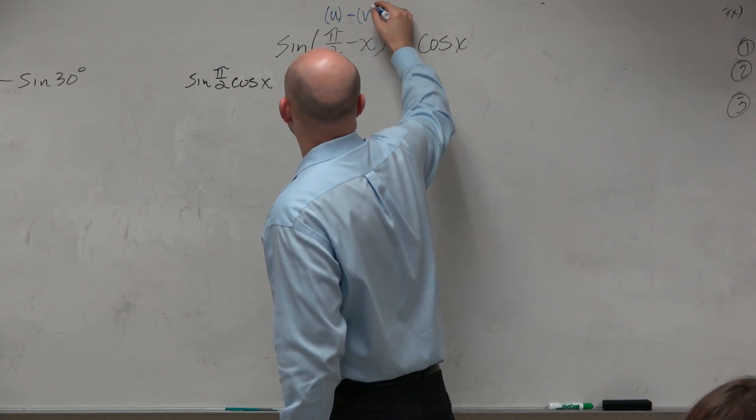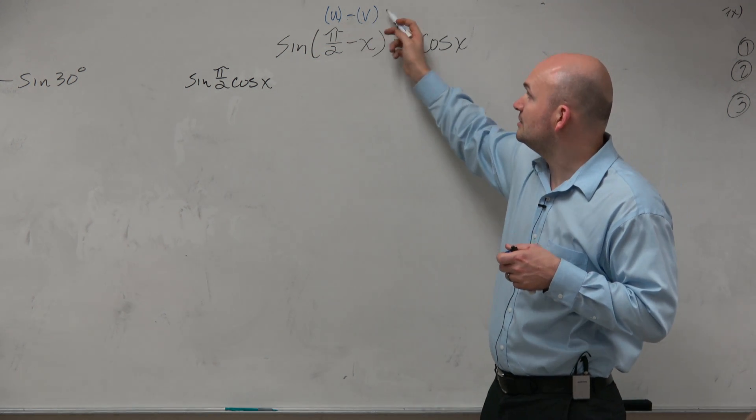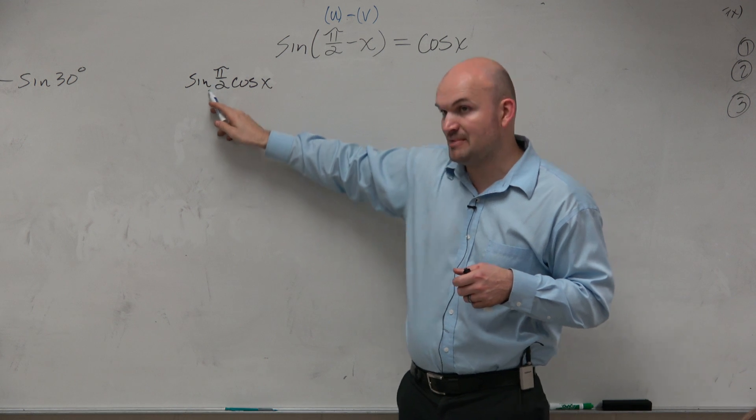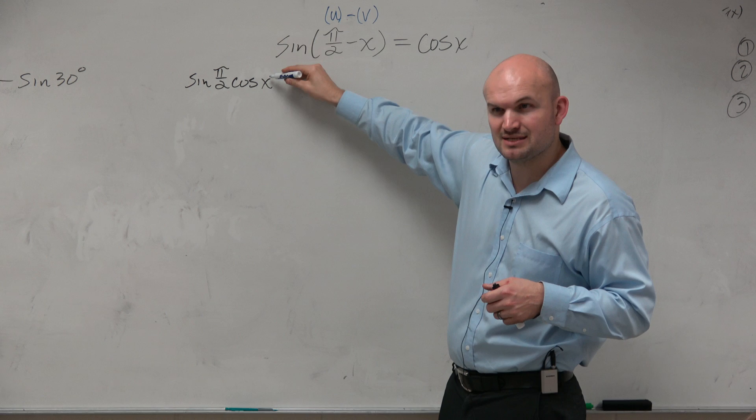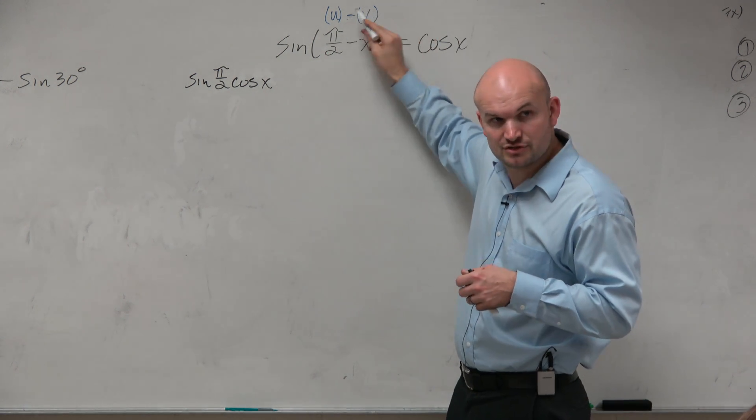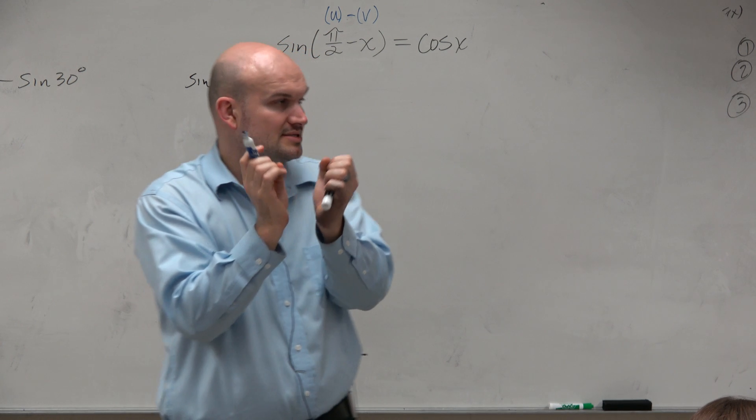So the subtraction does not make the v or the x negative. When I'm plugging them in, that's my u and that's my v. Does that make sense? The negative does not distribute inside of it. It's u minus v. So think of u and v as separate.